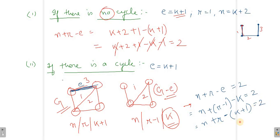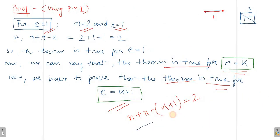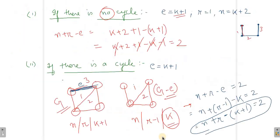And now that is important: N plus R minus (K plus 1) — that is the result with the cycle case as well.